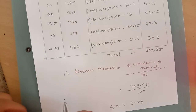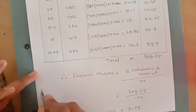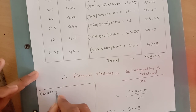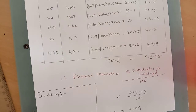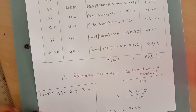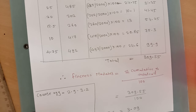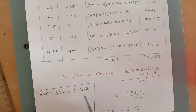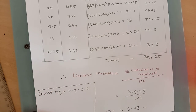So our fineness modulus is 3.09. From this value we determine whether this aggregate is suitable for concreting or not. We know that for coarse aggregate the fineness modulus range is 2.9 to 3.2. Our calculated fineness modulus is 3.09, which is not greater than 3.2, so this aggregate is suitable for concreting.